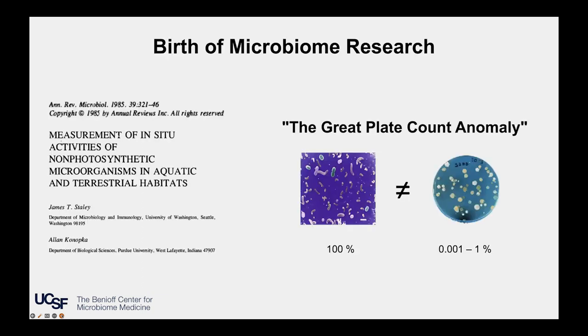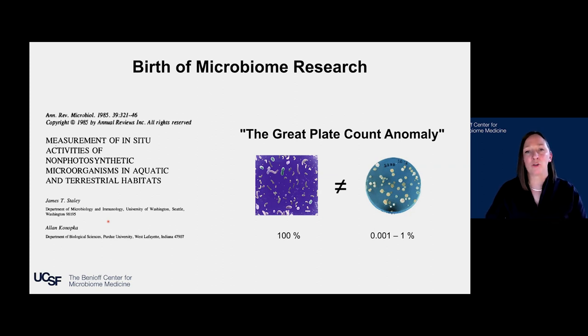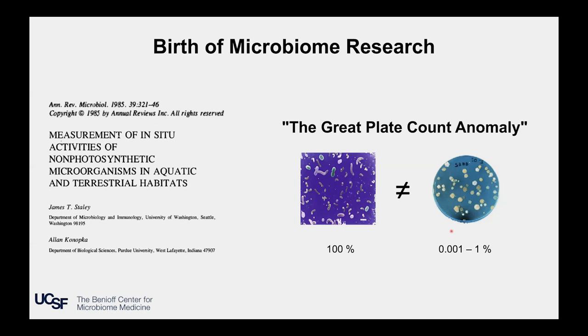So how did we get started in the field of human microbiome research? We owe the genesis of the field to luminaries in environmental microbiome research, and really a key paper in the mid-1980s in which James Staley and Alan Knopka observed that the diversity of microbes in just a few milliliters of water they could observe under the microscope was never recapitulated when they tried to grow those microbes under laboratory conditions. They coined this the great plate count anomaly, and this led to luminaries in the field of environmental microbial ecology to develop novel approaches to understand and detect the great diversity of microbes without ever having to culture or grow those organisms in the lab.